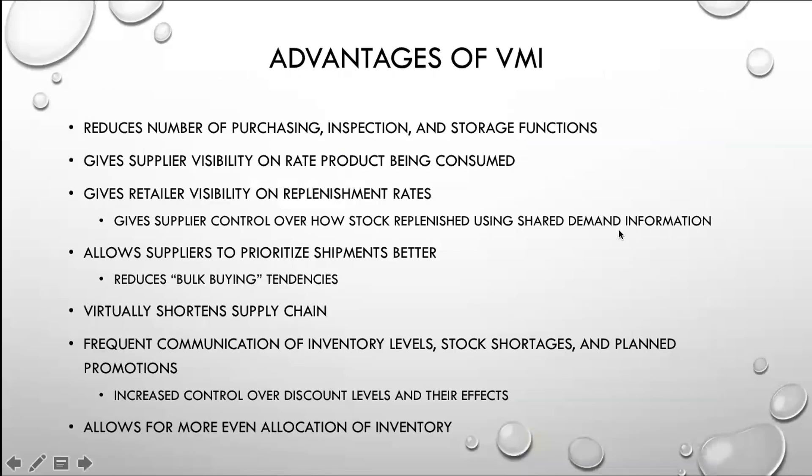There are several advantages of VMI. It reduces the number of purchasing, inspection, and storage functions. The feedback loop is delayed for every leg in the system, and each of these entities has purchasing, inspection, and storage functions — we can wipe all that out by basically shortening the distance virtually. The supplier gets visibility on the rate the product is being consumed, which allows the supplier to better schedule its capacity. It also gives the retailer visibility on the supplier's ability to replenish the stock, allowing the retailer to see if any problems are on the horizon.